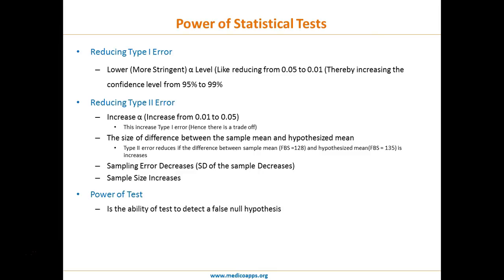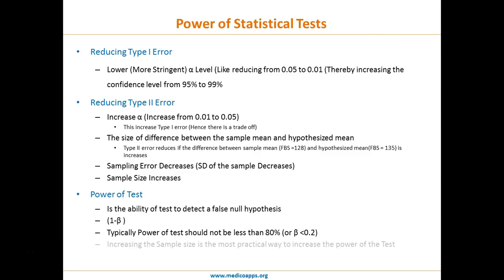The power of a test is the ability of the test to detect a false null hypothesis, and it is defined as 1 minus beta, where beta is Type 2 error. Typically the power of a test should not be less than 80%, or beta should be less than 0.2, in medical statistical testing. Increasing the sample size is the most practical way to increase the power of the test. Remember: power of test depends upon beta, not alpha.